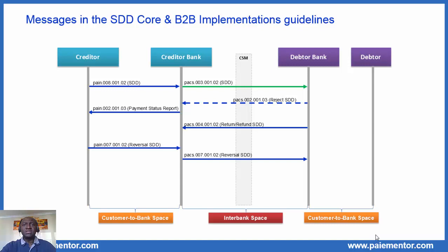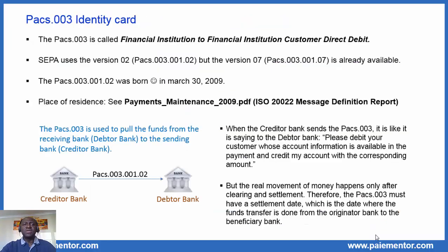Pretty important to have that in mind when we work on payment projects. As you can see, there are other messages exchanged in the interbank space. We will look at each of them in detail in future videos. For now, let's move to the Pax3 identity core. The Pax3 is called Financial Institution to Financial Institution Customer Direct Debit, so it is a message exchanged in the interbank space, either between two banks or between a bank and a clearing system.